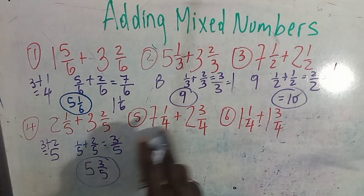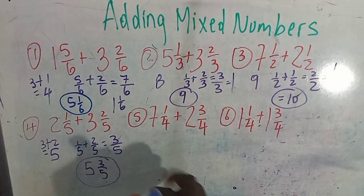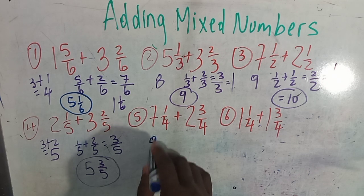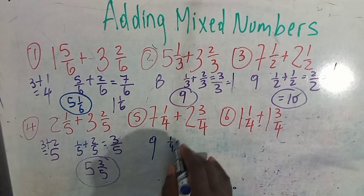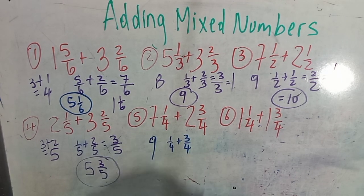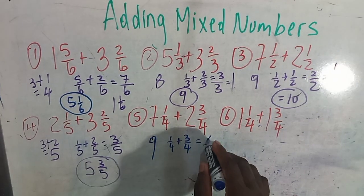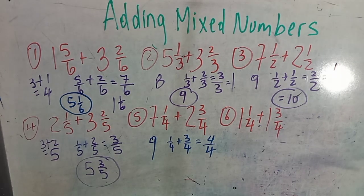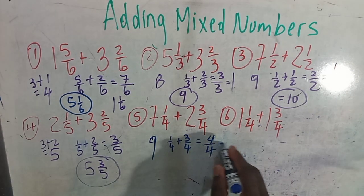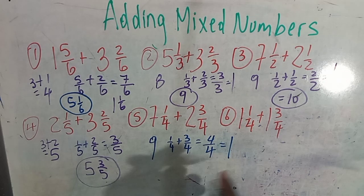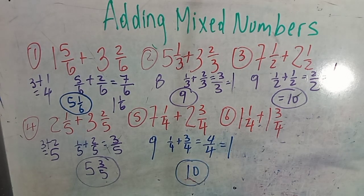Same principle applies. 7 plus 2 plus 2 equals 9. You have a quarter and you have 3 quarters. Put back the same denominator and add the numerators — this is 4. 4 over 4 is the same as a whole. 9 plus 1 gives you 10. That is your answer.